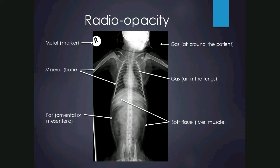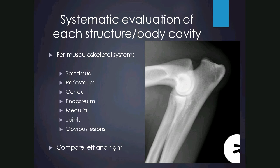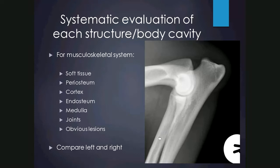When assessing a structure or body cavity it's important to do it systematically. For the musculoskeletal system I recommend starting from the outside: look at soft tissues, then move to the periosteum — an invisible layer lining the outside of the cortex which is not visualised unless affected by pathology. Then the cortex, the endosteum, the medulla, the joints, any obvious lesions, and compare the left and right limb if there's any doubt about pathology.